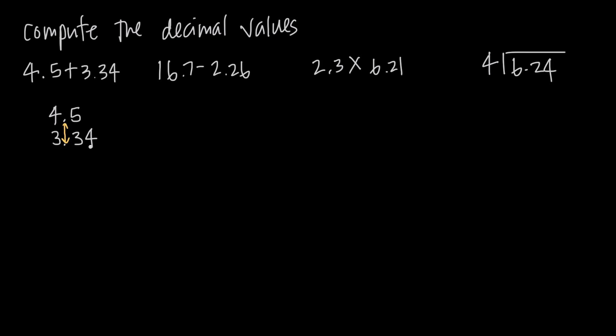If we have any values that are hanging off the right-hand side here, we can always just put in this 0 if we need to. 4.5 is the same as 4.50. If it helps you to write the 0 to remember that it's there, then you can do that. Otherwise, we just need to know that 4 plus 0 is still 4.